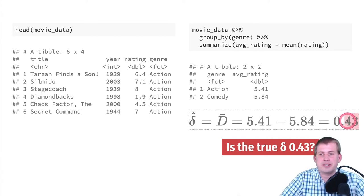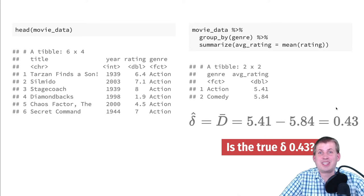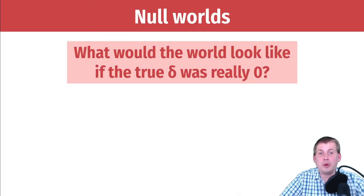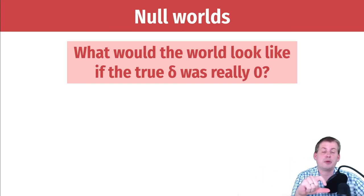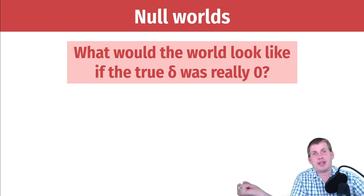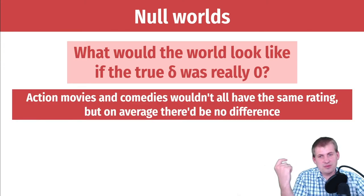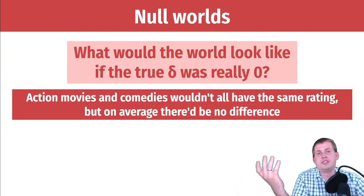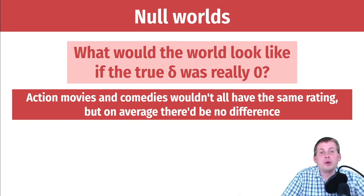We're going to ask a hypothetical question: let's imagine a world where delta — the difference between comedy and action movies — is actually zero, with no difference between the two. That doesn't mean every action movie and comedy would have the same rating; you'd still have bad and good movies of each type. But on average they'd have no difference. That's the assumption in this null world.